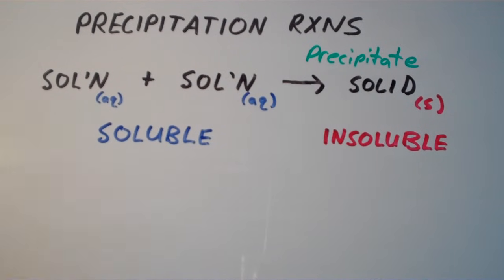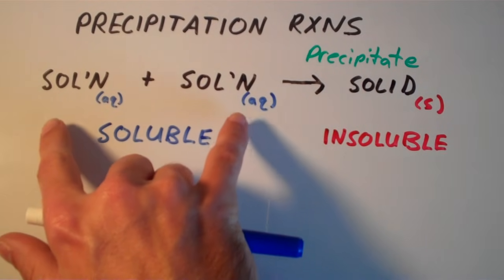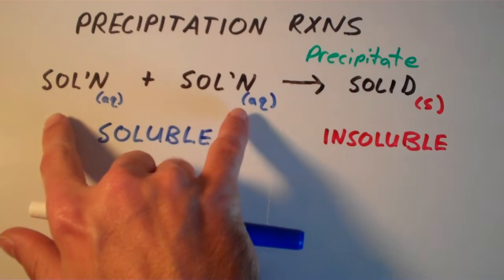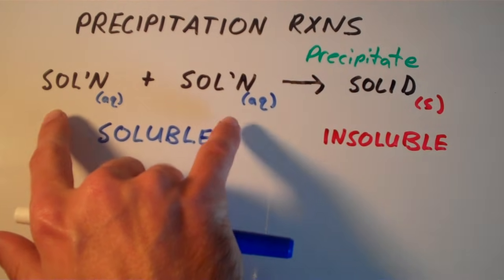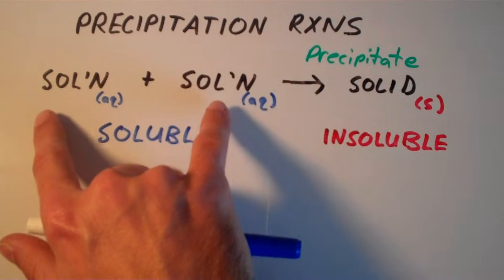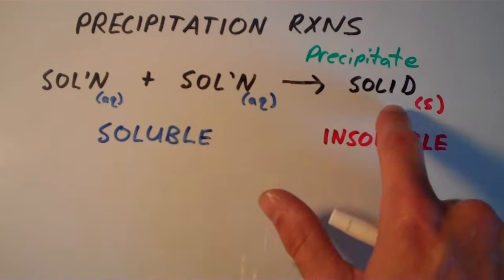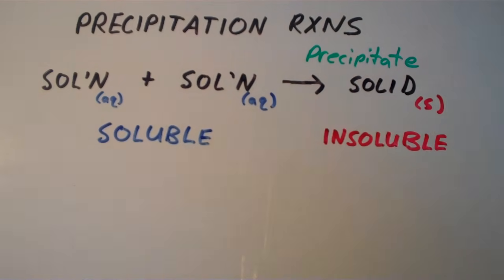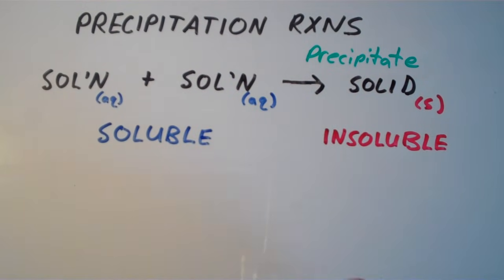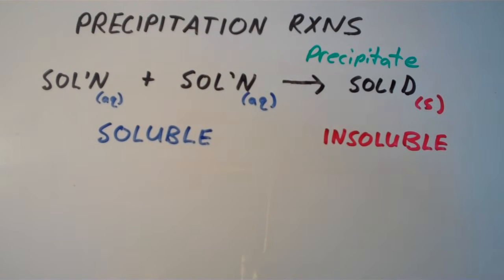In general, what you do in a precipitation reaction is you mix two or more solutions together. These solutions could be ions or they could be soluble ionic compounds. When we mix these solutions together, we get a solid that forms out of the solution. This solid is called a precipitate, or we say that the solid precipitates out of the solution. The word precipitate can be used as a noun or a verb.